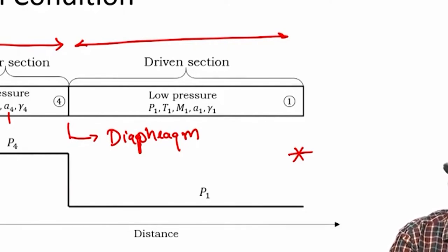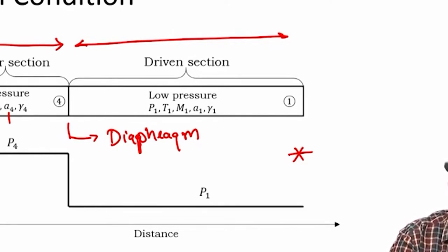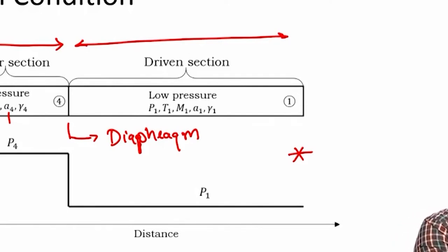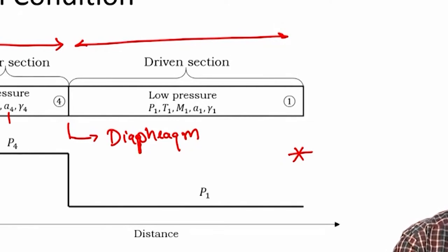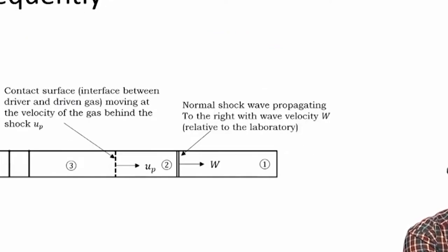The gases on the high-pressure driver side and the driven side can in general be different, depending on the applications the shock tube is to be used for. Important parameters are the pressures, temperatures, and the speed of sound in both the high-pressure and low-pressure sections. If you look at the initial pressure profile of a shock tube, it shows high pressure in the driver section and low pressure in the driven section, with a sharp jump across the diaphragm. The moment the diaphragm bursts, several things happen in the shock tube and the flow evolves from there.